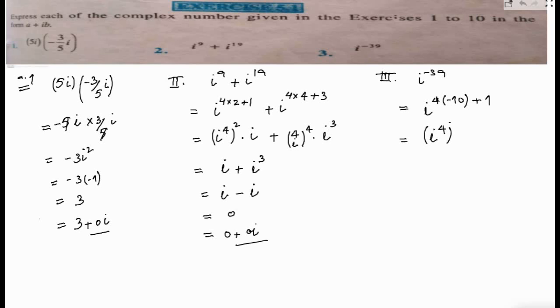So that way I will get iota to the power 4, to the power negative 10, then I will multiply it. Bases are same, powers get added.